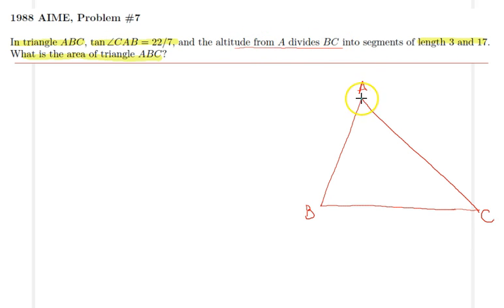I'll drop the altitude from A to BC and let's call this point D. What I know is BD is 3 and DC is 17. Let's call this altitude H.